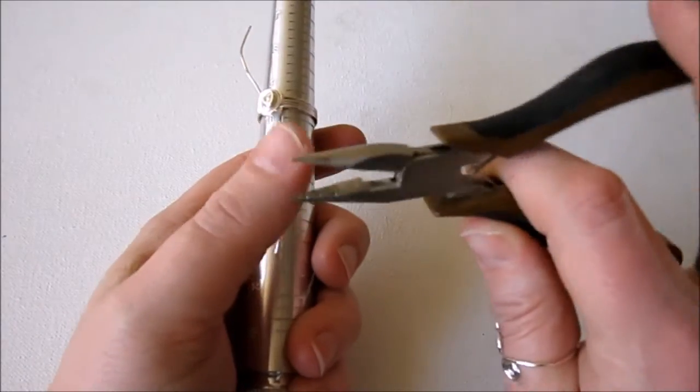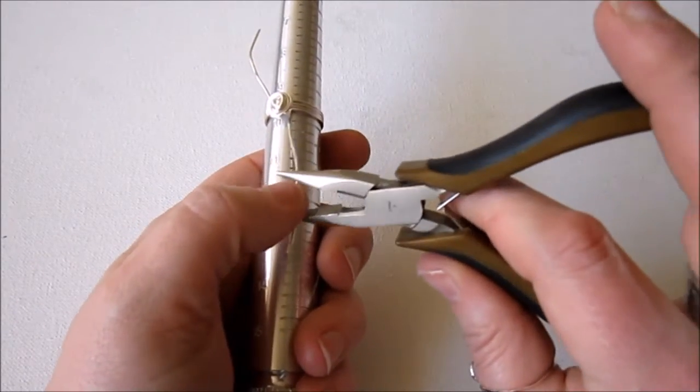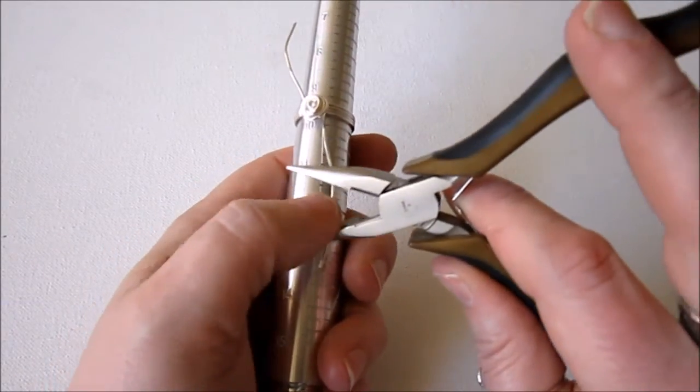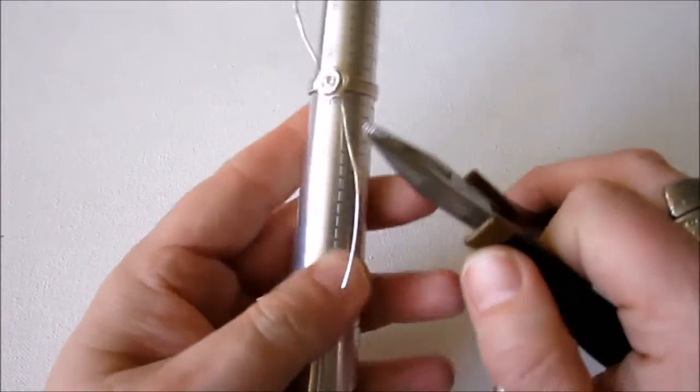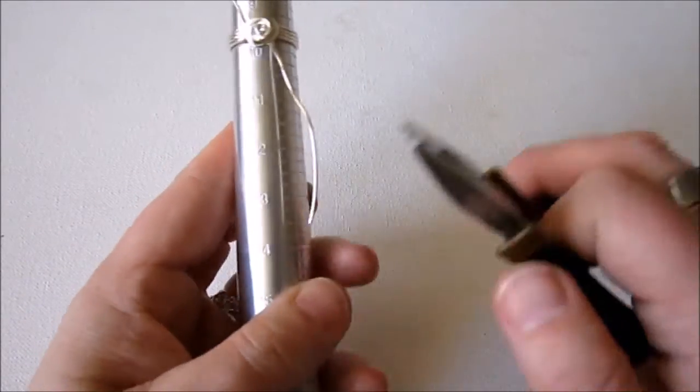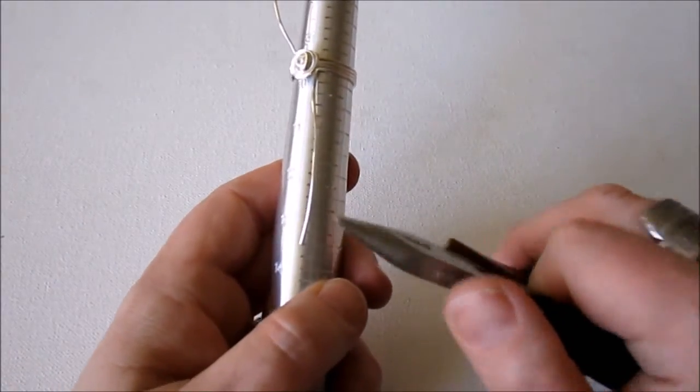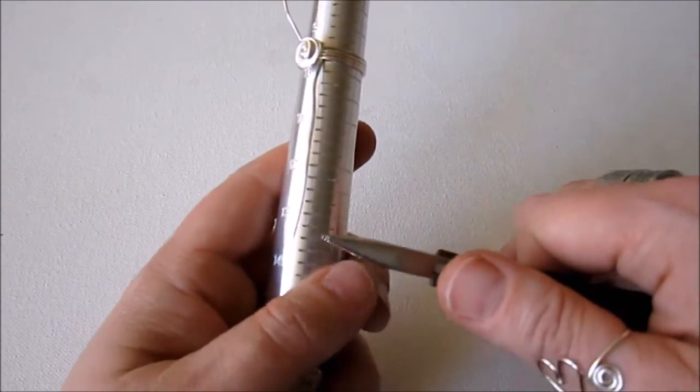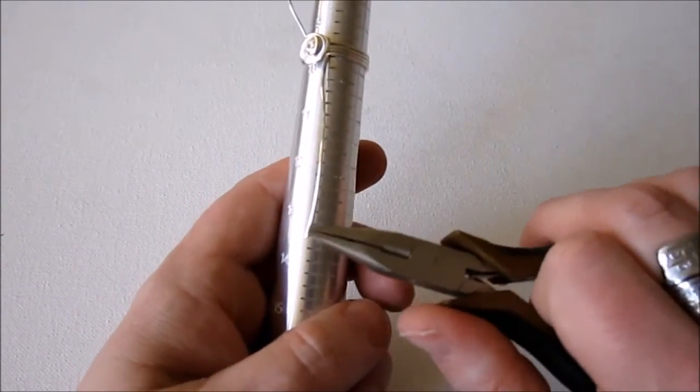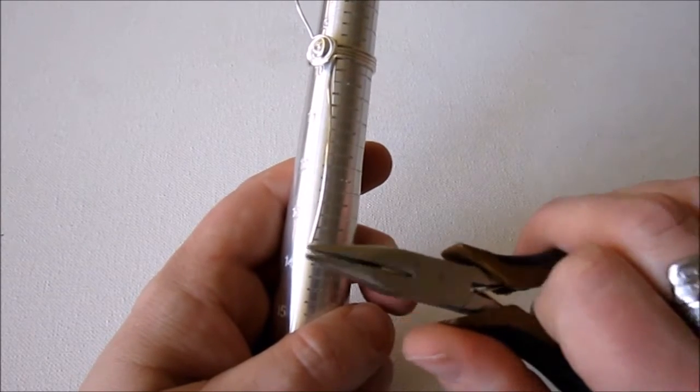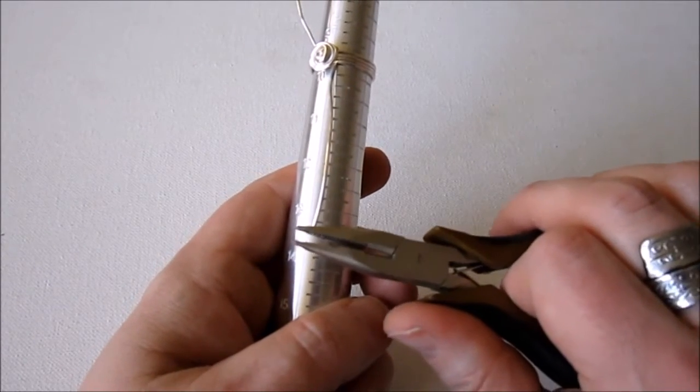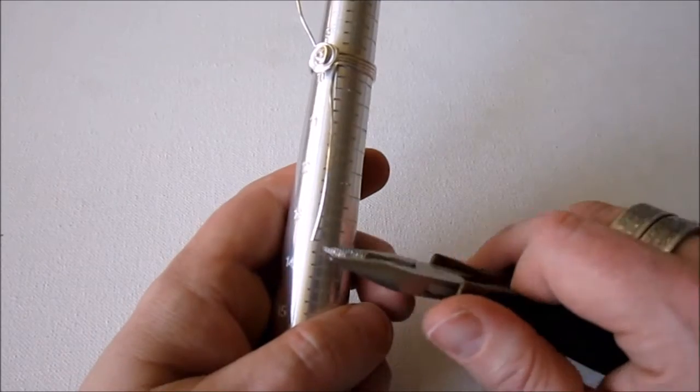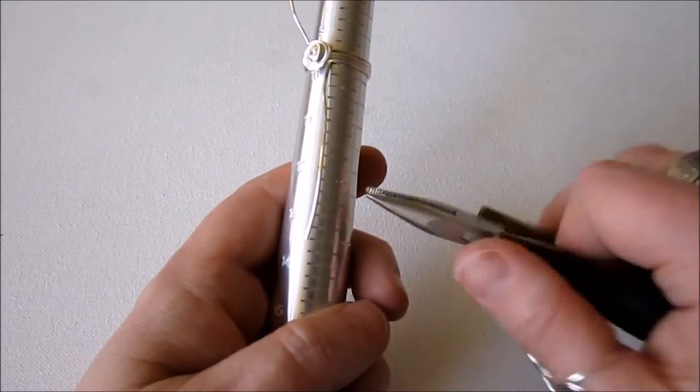And now grab your serrated chain nose pliers. These are the ones with the teeth. And this is where it's very handy to have them because they hold onto the wire really well and you can get a really tight wrap. But you want to hold the wire only by the very end because these are going to make a mark on your wire. So you only want to hold it by the end so you can clip off the end.